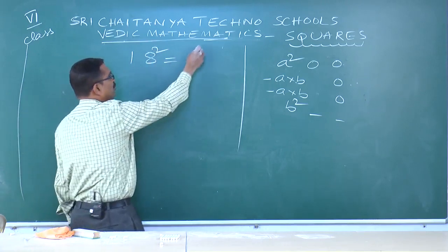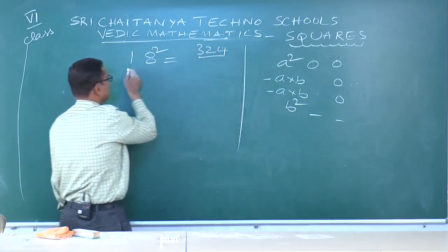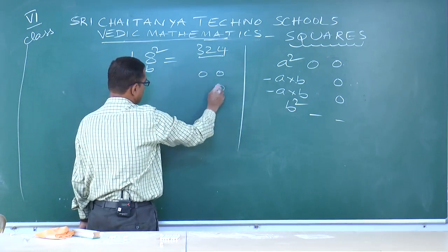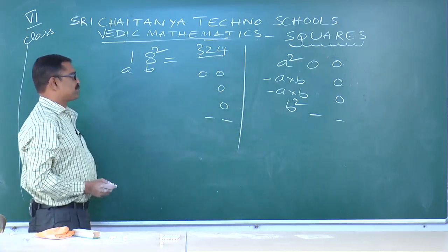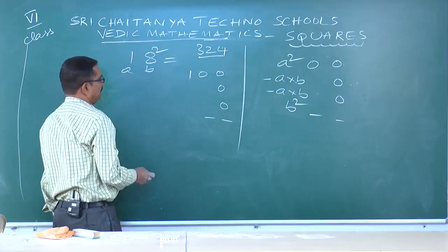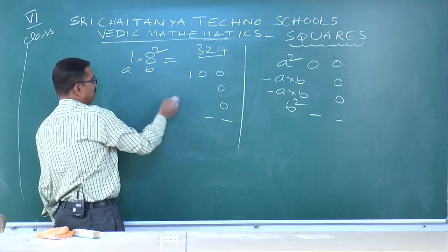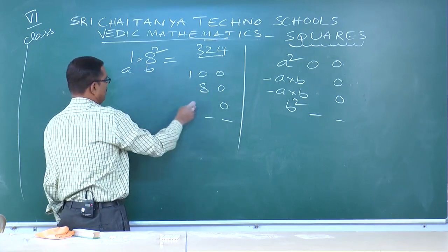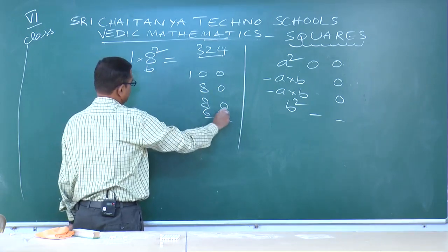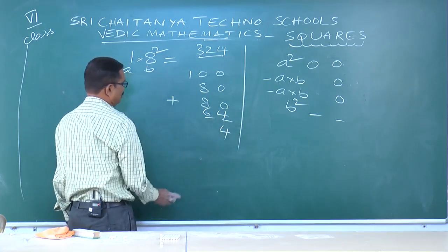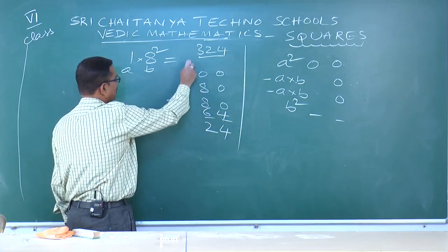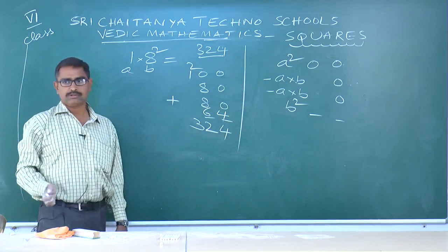Next example: 18². Here a=1, b=8. Use the formula: a²=1²=1, a×b=1×8=8, a×b=1×8=8 again, b²=8²=64. Add: 4; 8+8=16, carry 6; 1+6+1=8; result: 3 — answer is 324.